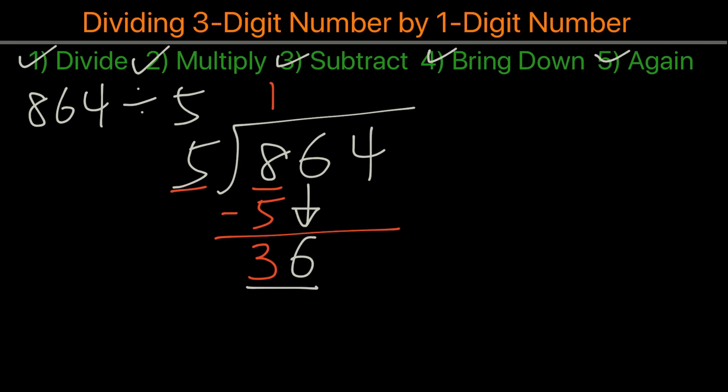We need to divide that by 5. We can see 5 times 7 is 35, and then we'll subtract 35 from 36, and we will get 1.